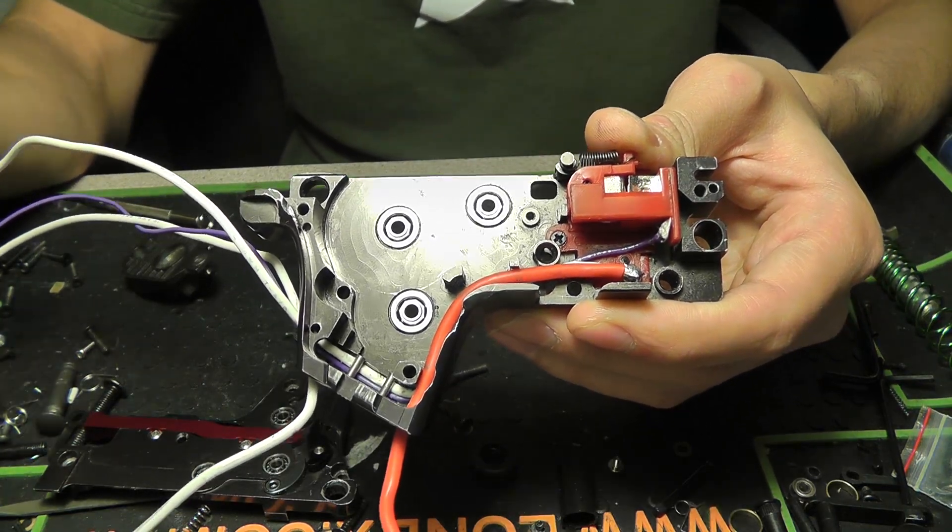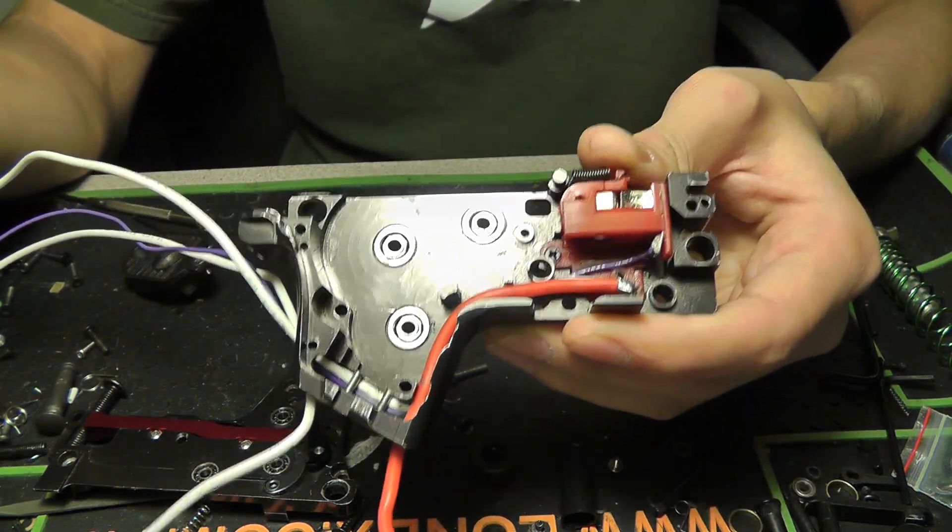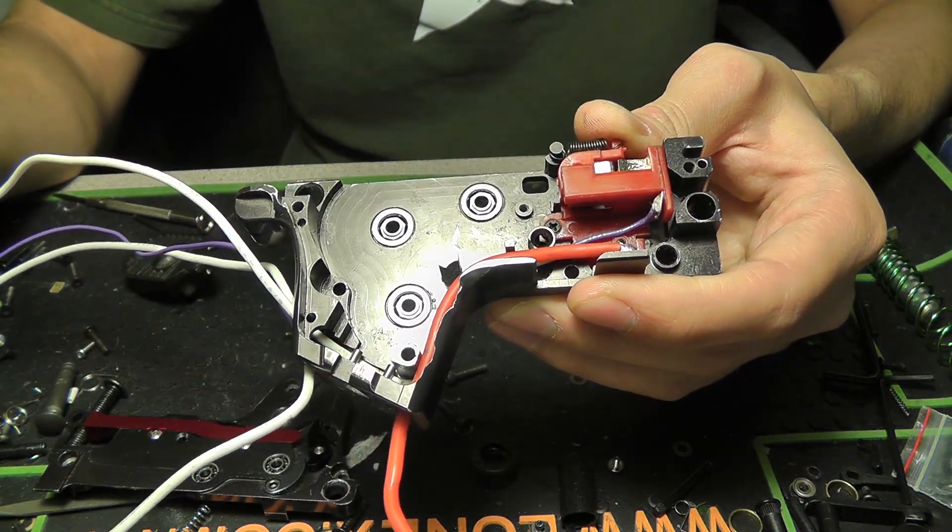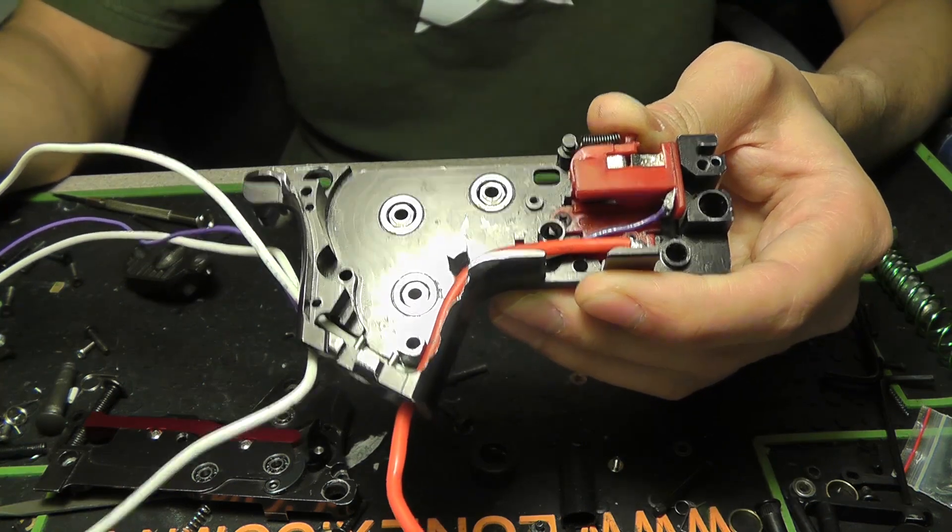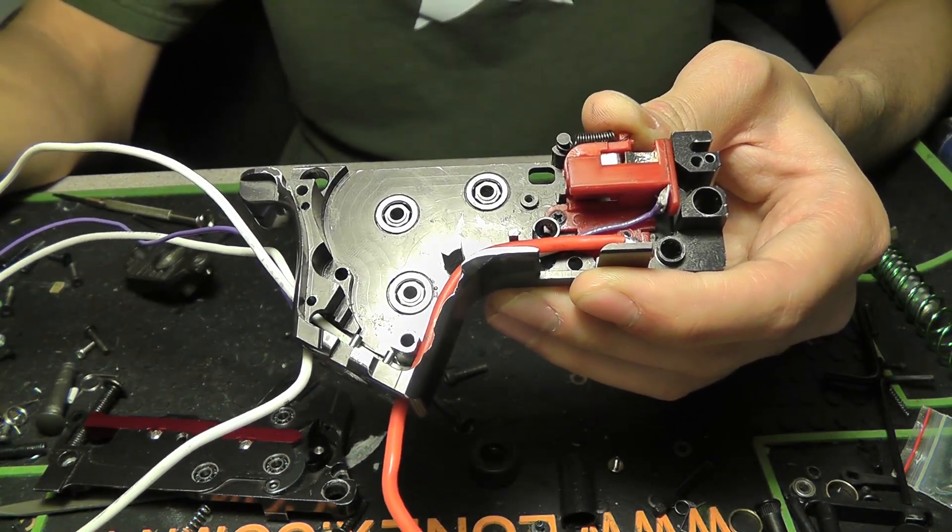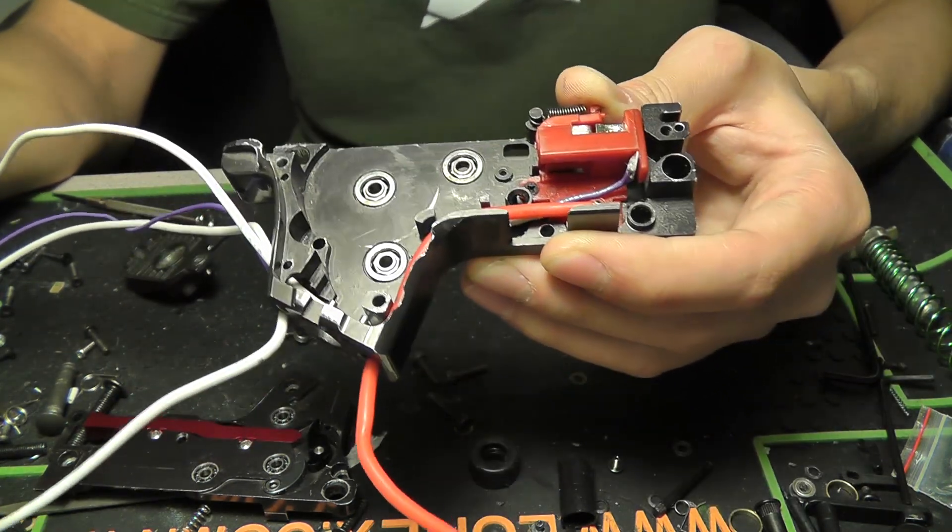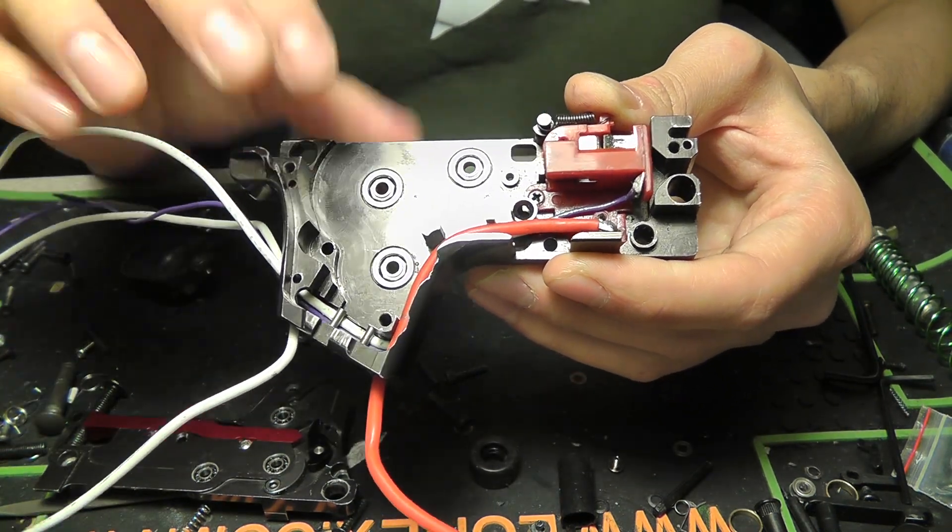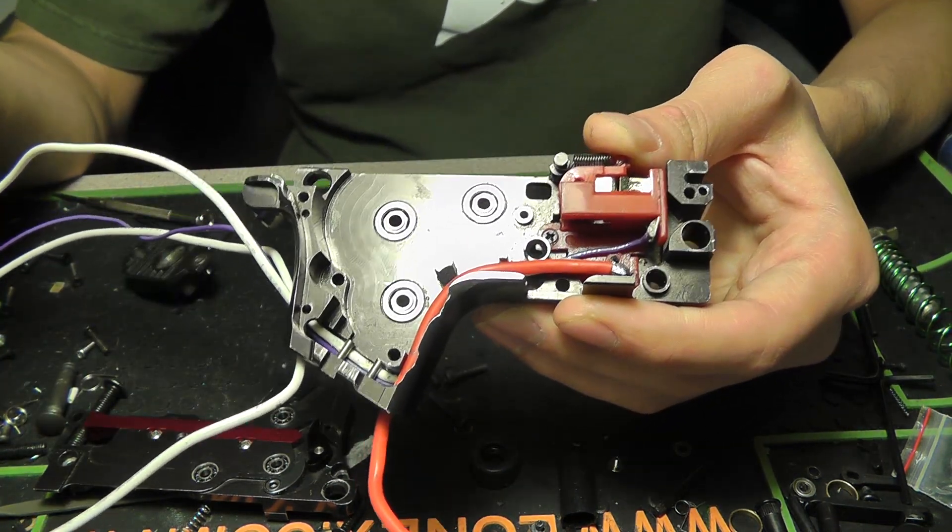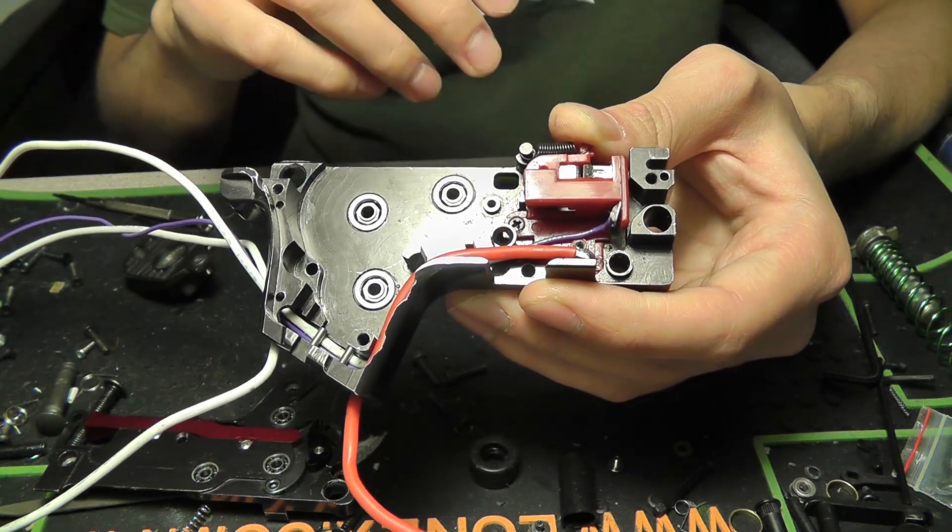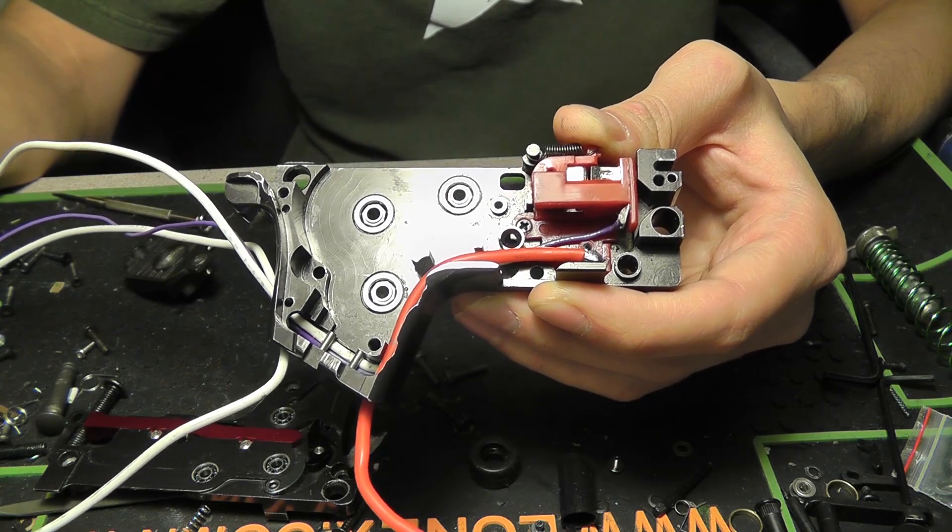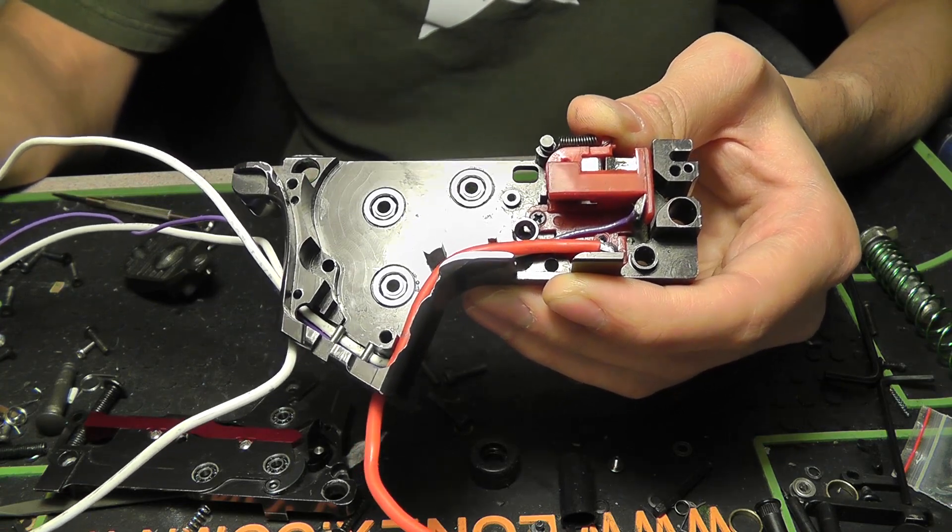It was like 7.2 or 8.4 volt nickel metal or NiCad batteries that were, for the time, all they needed. But since then we've gotten into complex upgrading and tinkering with guns, so we're using these 11.1V lipos with massively higher discharge rates and amounts of power being sent through the trigger contacts.